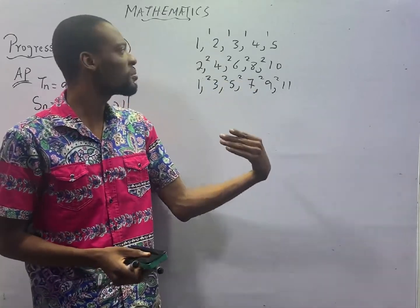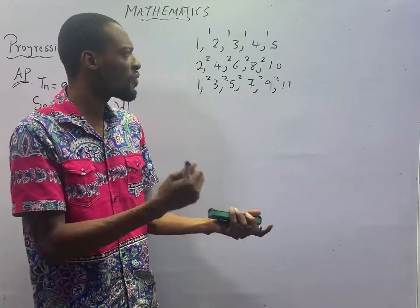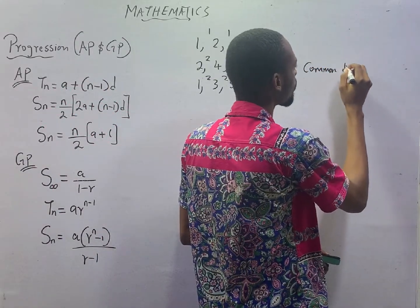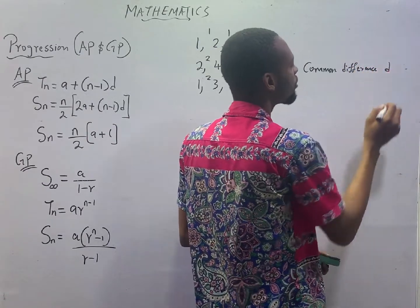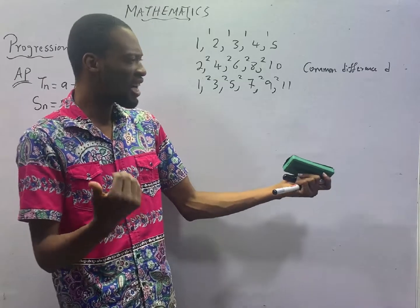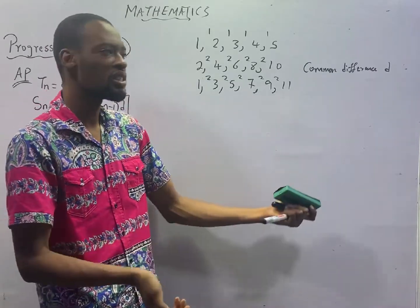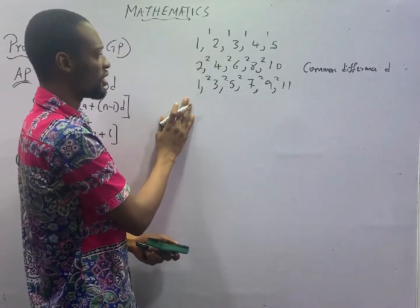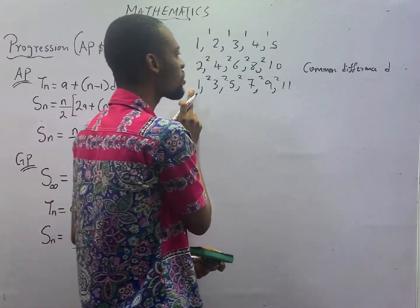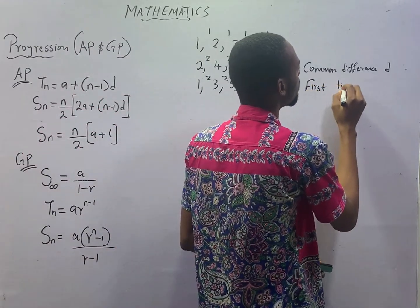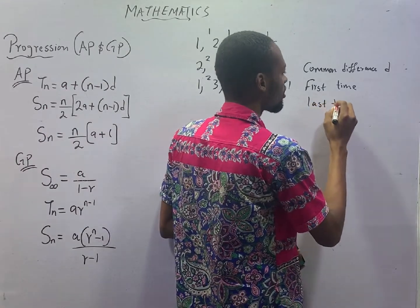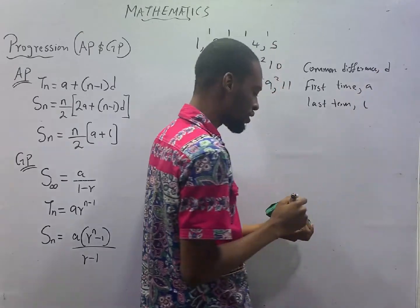The second minus the first is the same thing as the third minus the second, and so on. So each of the progressions differs by a constant number, and that constant number is referred to as common difference D. In progression, we also deal with series and sequences. Series is simply an arrangement where values have particular properties or there is a difference between them. There is a first number, referred to as first term A, and a last number referred to as last term L. Common difference is D.